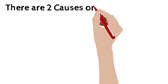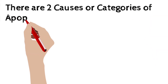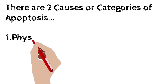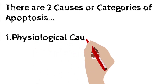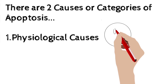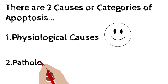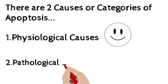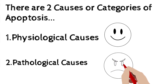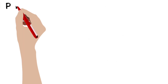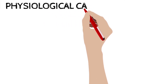As far as the etiology of apoptosis is concerned, there are two principal categories. The first one is physiological causes of apoptosis, which is a normal physiological mechanism. The second category is pathological causes of apoptosis, which indicate some underlying disease. We will start with physiological causes of apoptosis in our body.